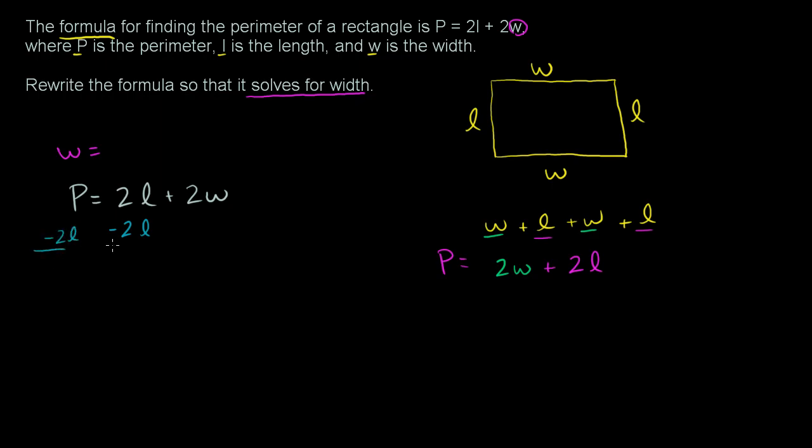We're doing it on both sides of the equation. Remember, an equation says P is equal to that. So if you do anything to that, you have to do it to P. If you subtract 2l from this, you're going to have to subtract 2l from P in order for the equality to keep being true.